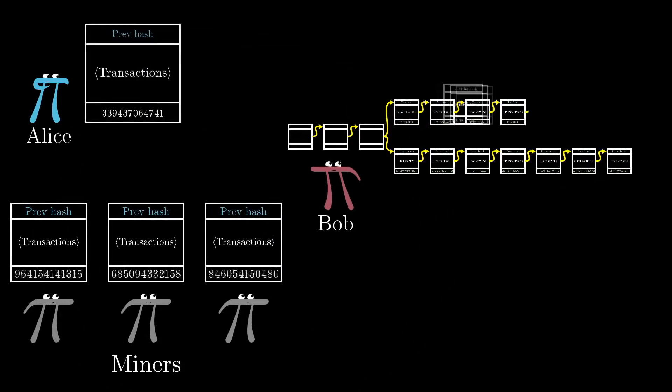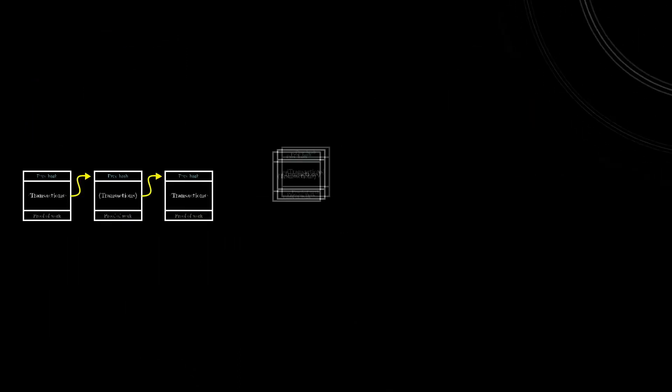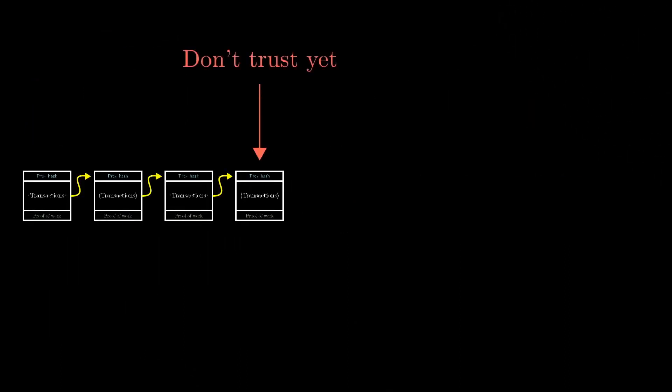So after enough time, Bob's just going to reject what he's hearing from Alice in favor of the longer chain that everyone else is working on.